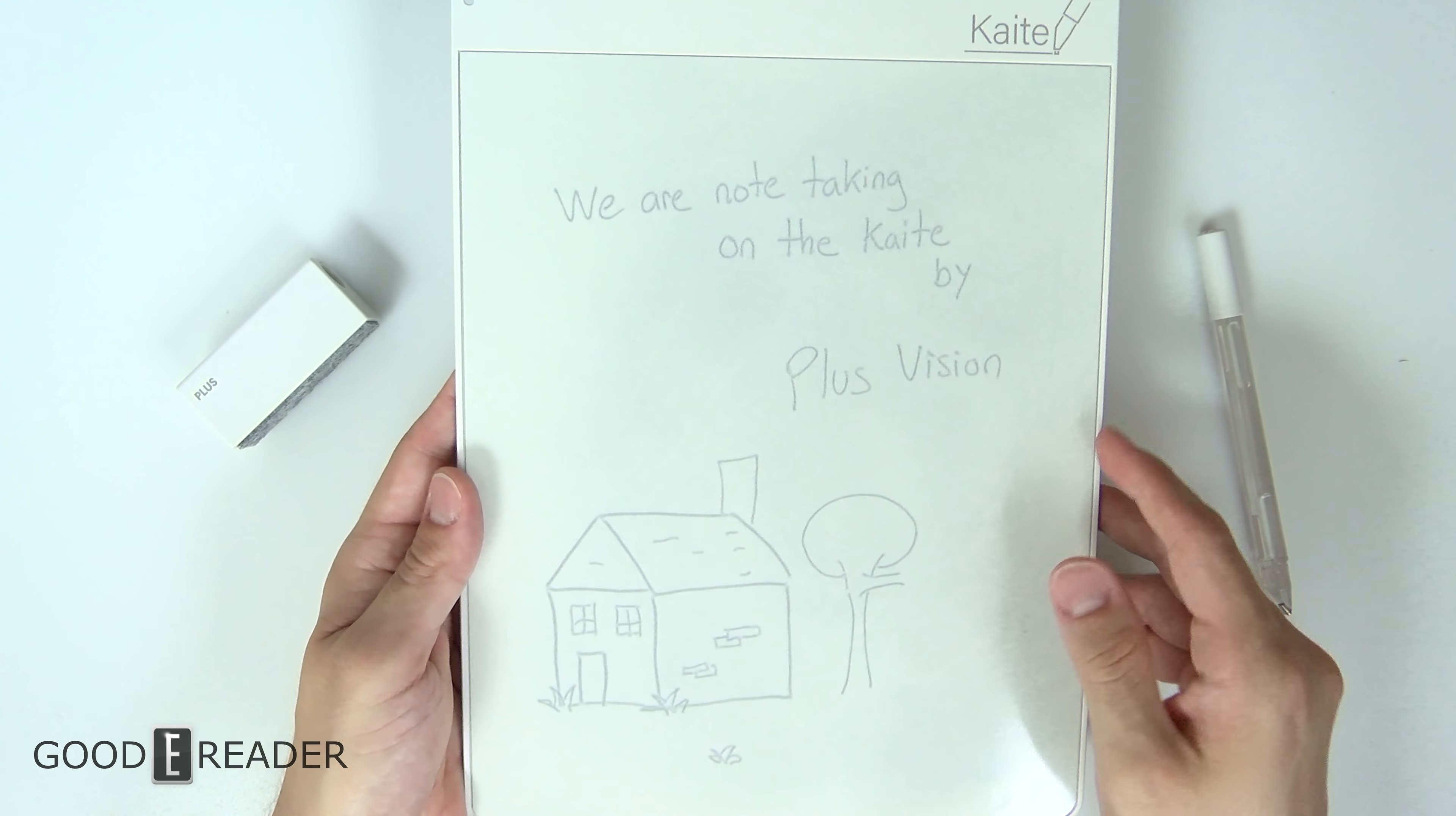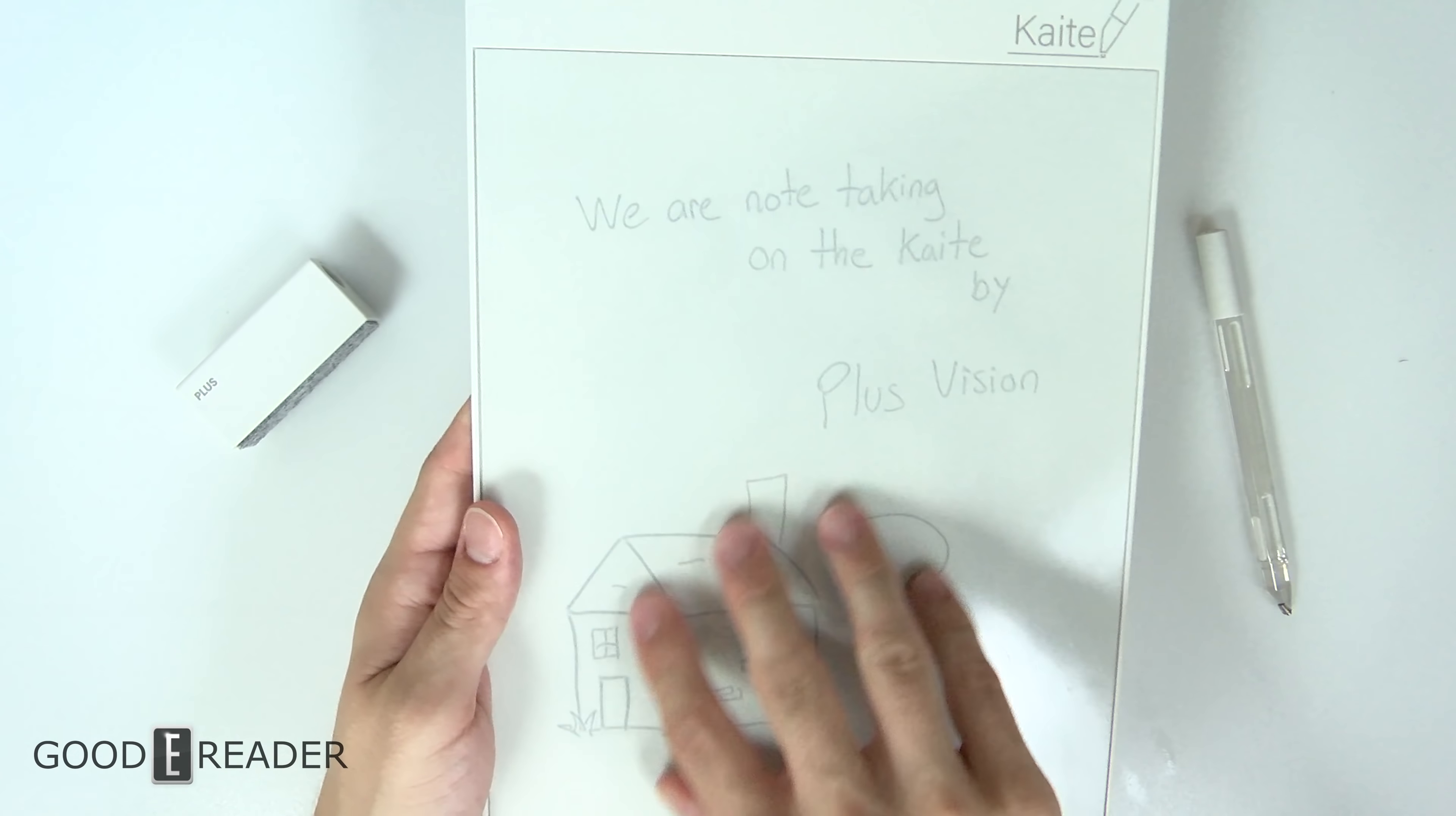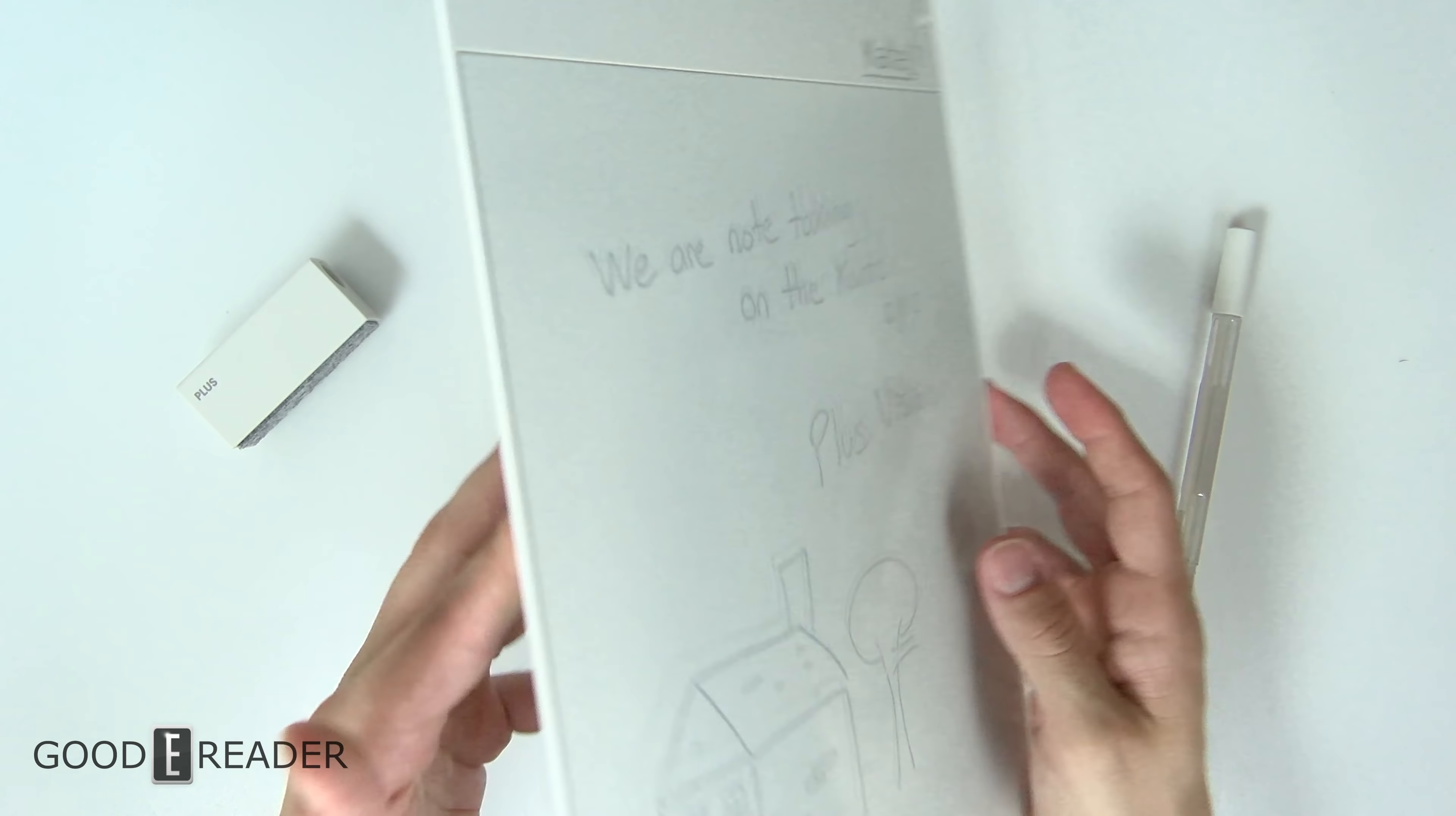So you can use this for digital signage as well. So when you write on the screen, you can basically put this out your store window, and it'll say what it'll say. Because this will never be affected by any other element except for another magnet, whether you draw on the screen or erase on the screen respectively.